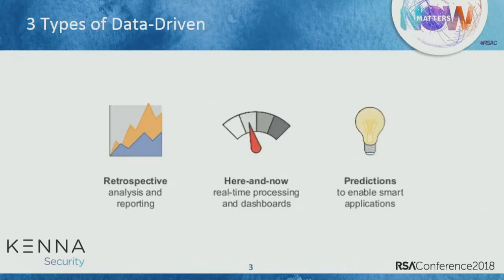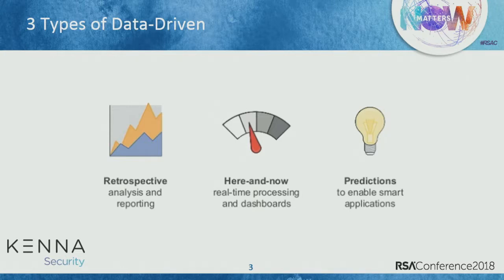Really this talk is about data-driven analysis of security vulnerabilities, and there are only three types of data-driven analysis. The first is retrospective analysis — that's what we've been doing in security for 20 years. We look at vulnerabilities, describe them, think about events in relation to those vulnerabilities, and come up with methods of categorizing them — whether that's a CVSS score, a severity ranking, or some home-baked process that is more specific and better. Those are retrospective analyses based on what we've seen.